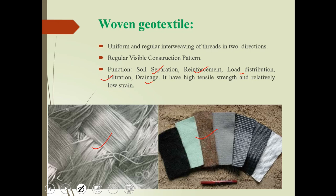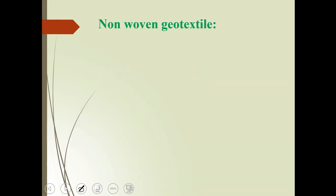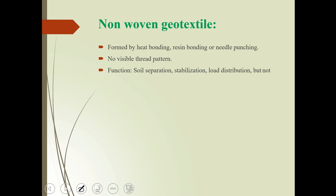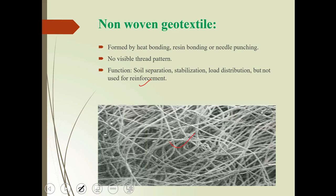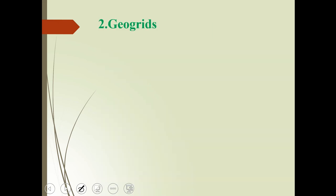Non-woven type geotextile is formed by heat bonding, resin bonding, or needle punching, with no visible thread pattern. Functions of non-woven geotextile include soil separation, stabilization of soil, and load distribution. However, there is a limitation: non-woven geotextile cannot be used for reinforcement like woven geotextiles.